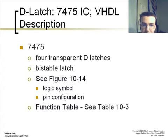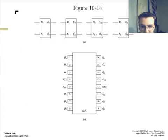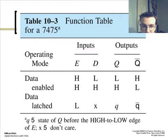A 7475 is a D latch device for transparent D latches. It's a bi-stable latch. This is an example of that chip with the internal diagram shown above with the four D latches with its cues. And this is a function table showing it has a data enable and data latched operating modes for this chip.